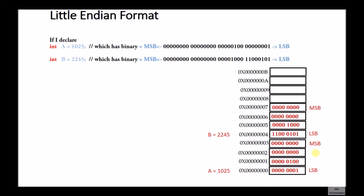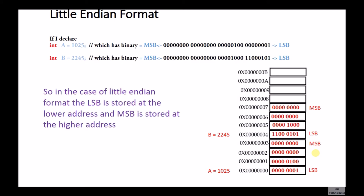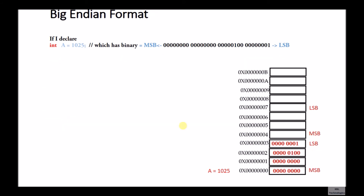Let's take another integer: b equals 22245, which has the binary number as shown. This b occupies memory locations 4 to 7, and the LSB is stored at address 4. LSB stands for Least Significant Byte and MSB stands for Most Significant Byte. So in the case of Little Endian format, the LSB is stored at the lower address and the MSB is stored at the higher address.